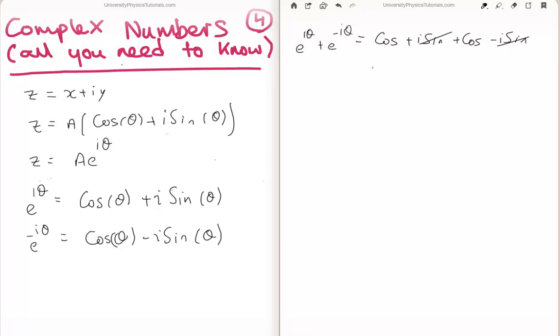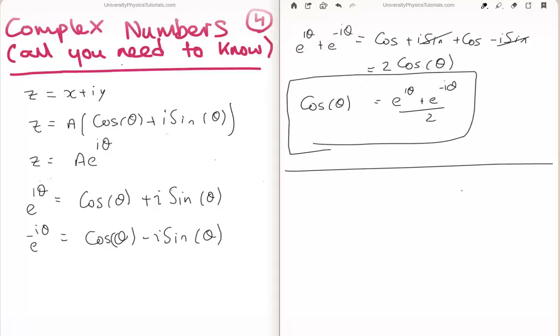The i sines cancel and we're left with twice cos theta. So we can rewrite this as cos theta is equal to e to the i theta plus e to the minus i theta over 2. And that's how you write cos in terms of complex exponentials.